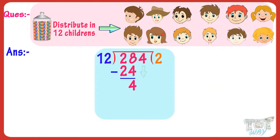Now, bring down the next digit in the dividend. Here, it's 4. Now, we have to divide 44 by 12. Find the multiple of 12 which is nearest to 44.